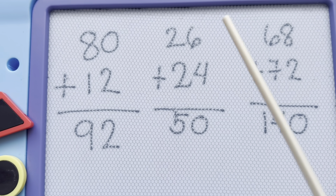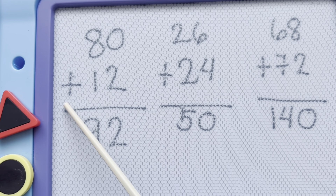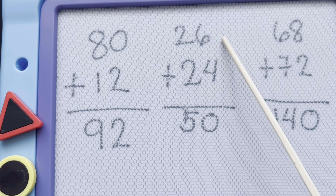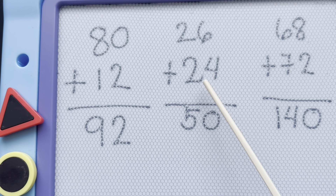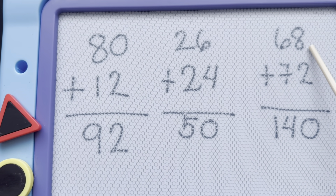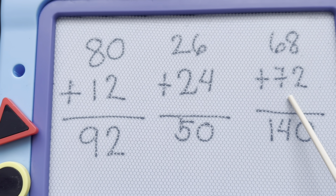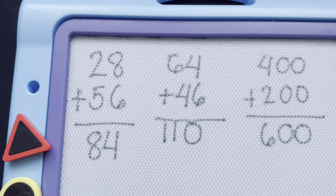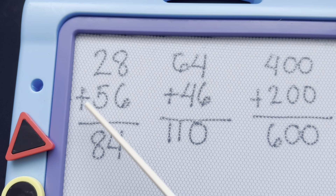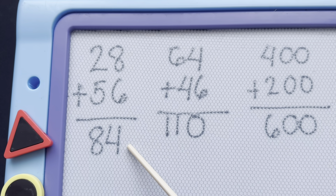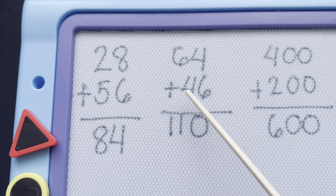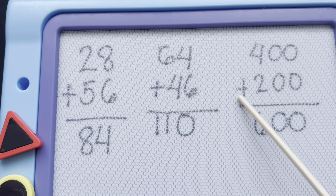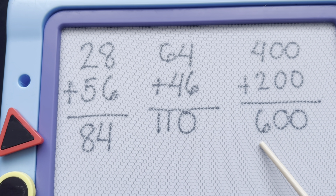Let's try to add more numbers. Next, 80 plus 12 is equals to 92. 26 plus 24 is equals to 50. 68 plus 72 is equals to 140. 28 plus 56 is equals to 84. 84 plus 46 is equals to 110. 400 plus 200 is equals to 600.